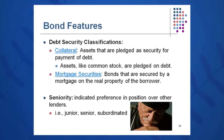Collateral are assets placed to back the bond in case something happens to the company. For example, buildings placed as collateral could be sold to generate cash to pay back bondholders. Mortgage securities are bonds secured by a mortgage on the property of the borrower. For seniority, there are junior bonds and senior bonds, which indicate who gets paid first in case of default.